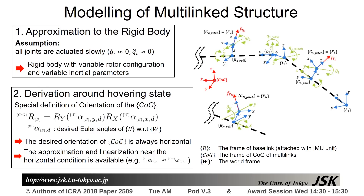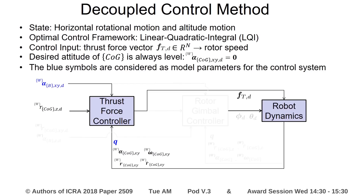We introduce a crucial assumption for modeling: all joints are actuated slowly. Therefore, the multi-linked model can be considered as a single rigid body. We derive this approximated model around the horizontal hovering state. The first part of the decoupled control system is the thrust force controller based on the linear quadratic integral framework, with control input associated with rotor speed.